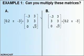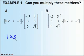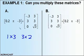Example one: can we multiply these matrices? What I like to do is check the dimensions. The dimensions of the first matrix are 1 by 3. The dimensions of the second matrix are 3 by 2. We need to check the columns of the first matrix and the rows of the second matrix and see if they're equal.